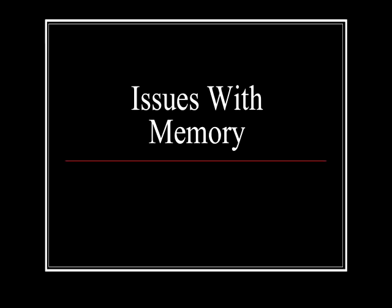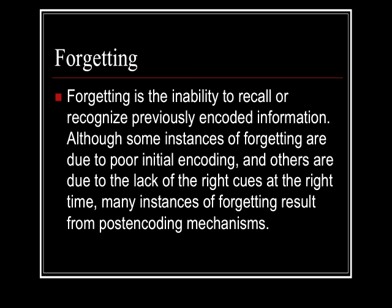This section is going to cover issues with memory — problems that we have when we're trying to remember things, mostly forgetting. Forgetting is the inability to recall something that you've previously encoded. Sometimes forgetting is due to poor initial encodings, or the lack of cues you need — encoding specificity and transfer appropriate processing — or because your brain isn't connecting the information through some post-encoding mechanisms.